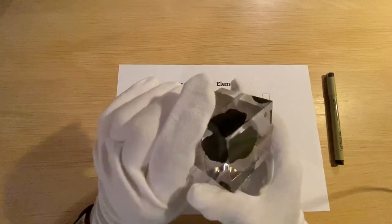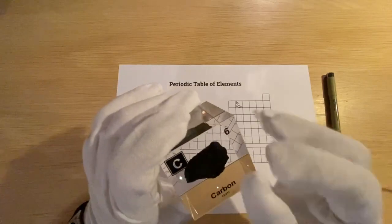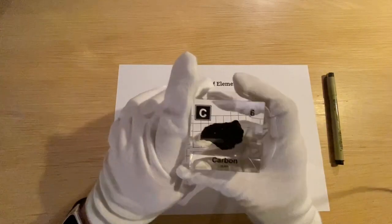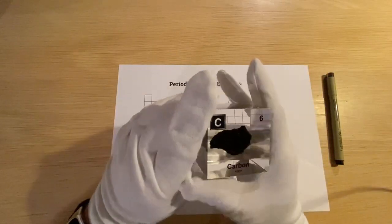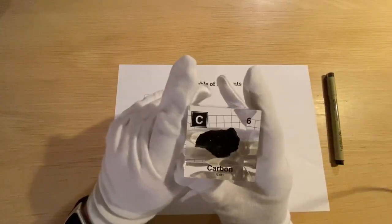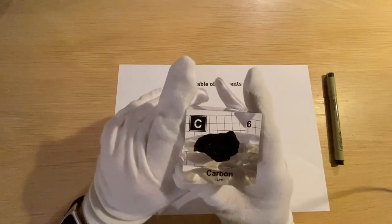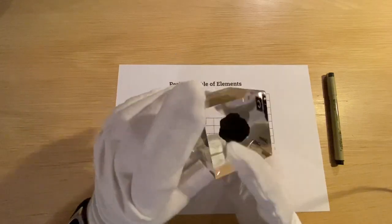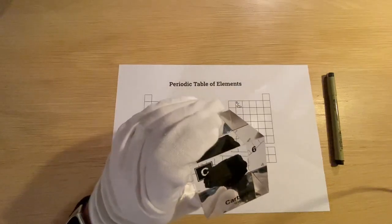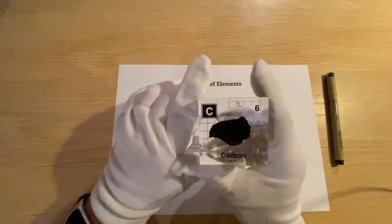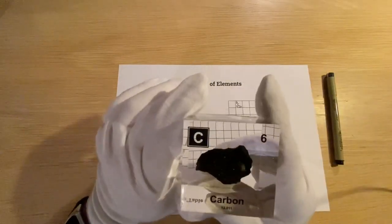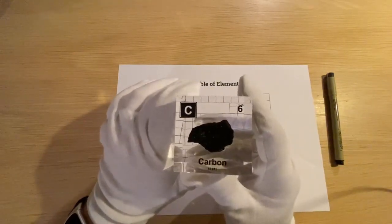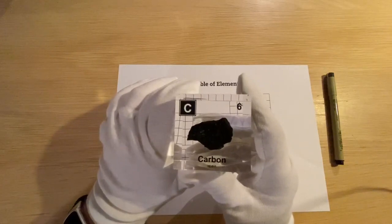Another way you can basically change the structure of carbon is when you put it together, and then you can create certain products. One of the products you can create is graphene, and graphene is used a lot for solar panels. As soon as that was figured out in the early 2000s, it became much easier to create solar panels, and it's something we still use to this day.